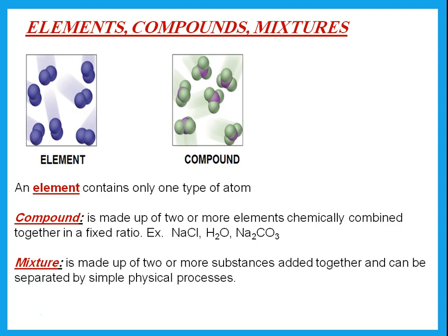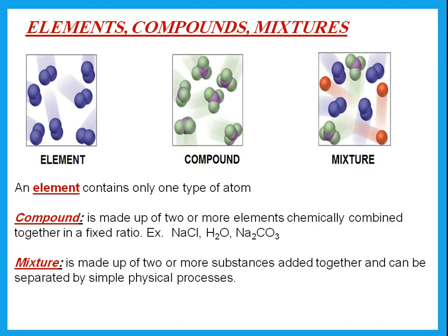A mixture is two or more substances added together. Never say 'combined' — that applies to compounds only. A mixture is made up of two or more substances, which could be two elements or two compounds, and can be separated by simple physical processes. You can also say it can be separated easily, or by simple methods. So a mixture is two or more substances — elements or compounds — added together and can be separated easily.